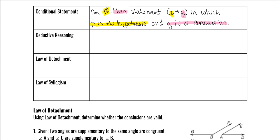P and q are just representations so we don't have to write out a huge long sentence every single time. In geometry we love using symbols, and the conditional statement symbol is p with an arrow — the arrow means 'then' — so p → q.